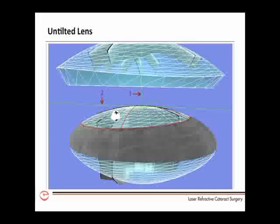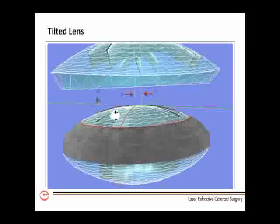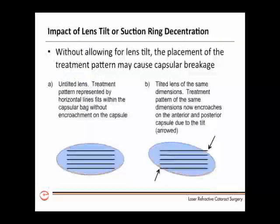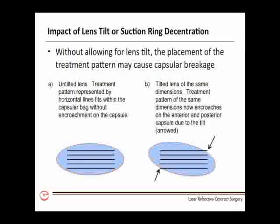In this first image, the optical axis of the lens passes through the centre of the cornea. In the second case, the optical axis of the lens is displaced from the optical axis of the cornea, indicating a tilted lens.